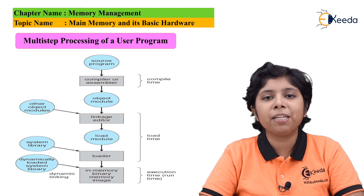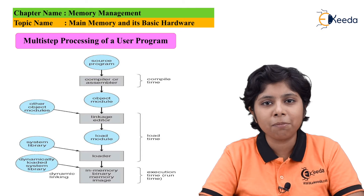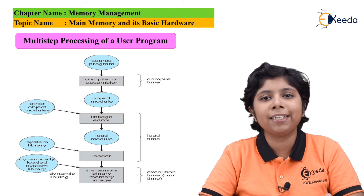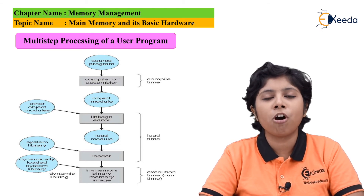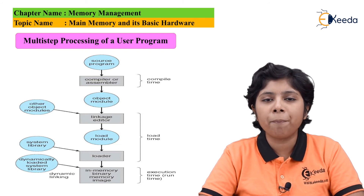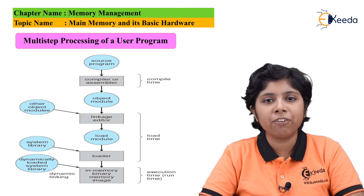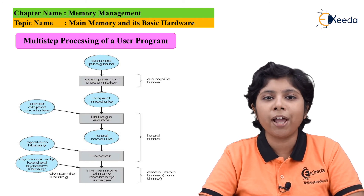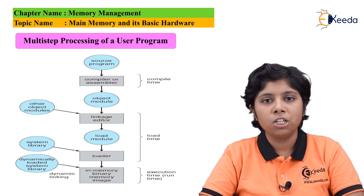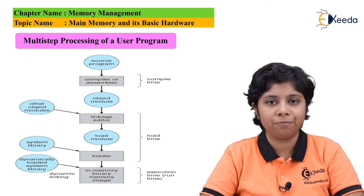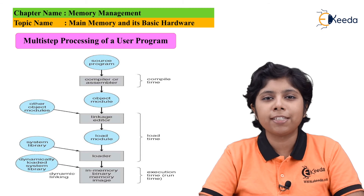The operating system, executing in kernel mode, has unrestricted access to both operating system and user memory space. It can load a user process into user memory, dump erroneous code, provide I/O operations to and from any memory devices, and provide other general services. The operating system executing in kernel mode can modify data structures for the kernel only — no user process is allowed to update these data structures.